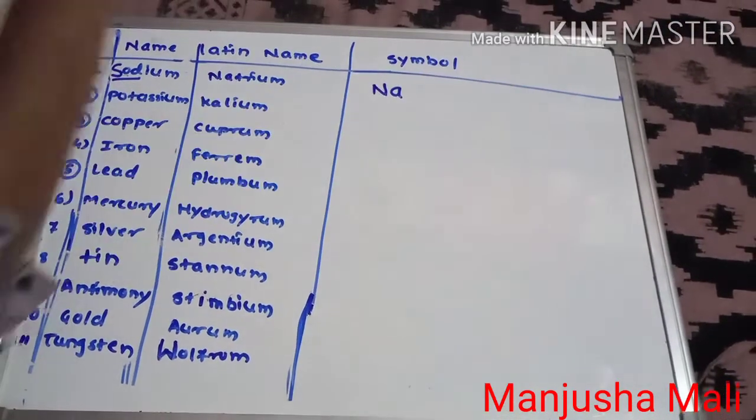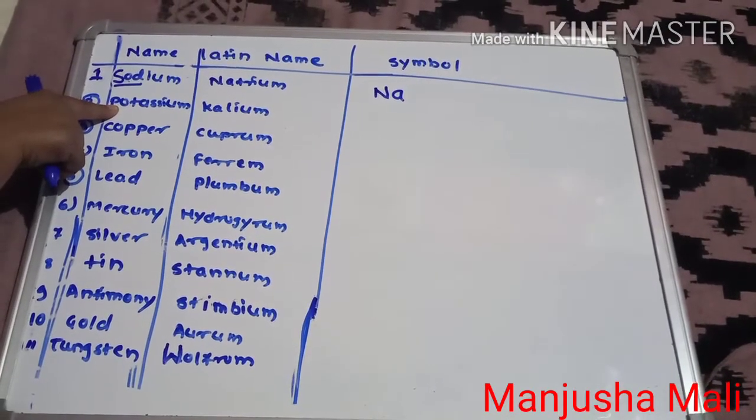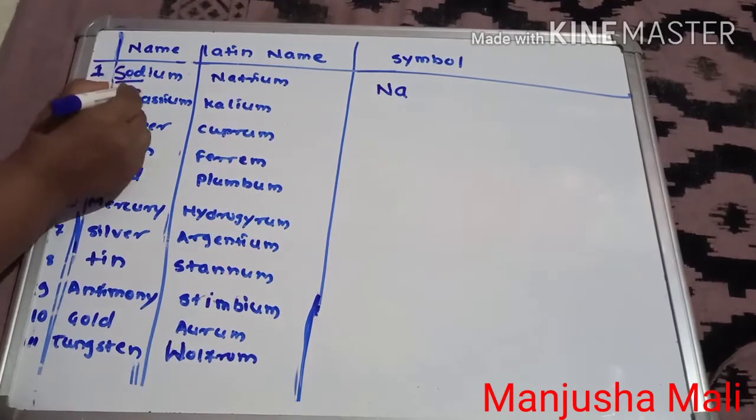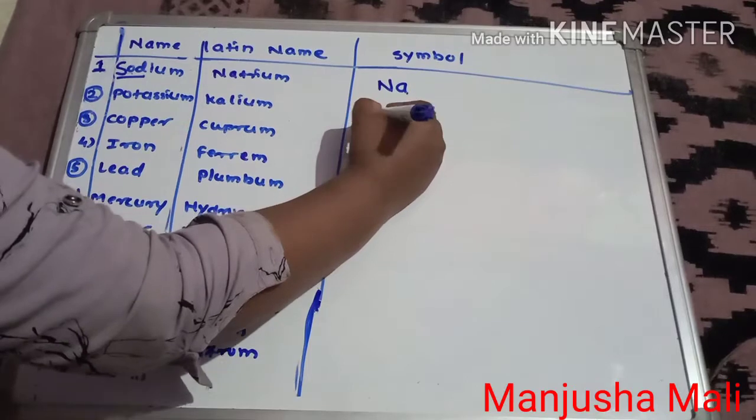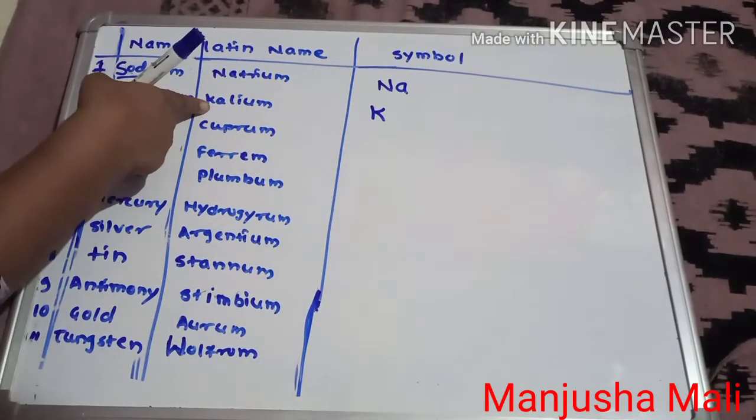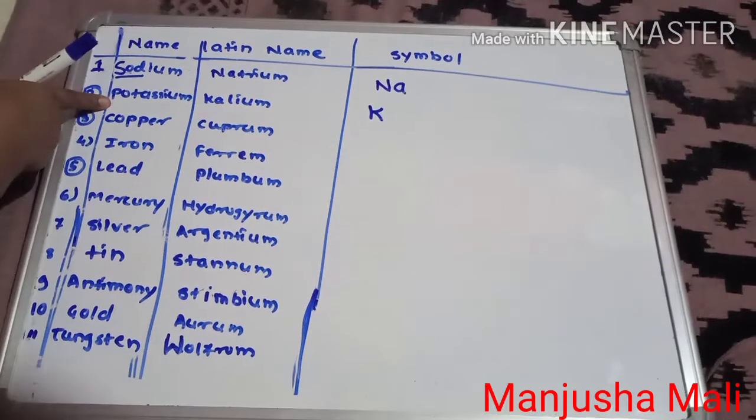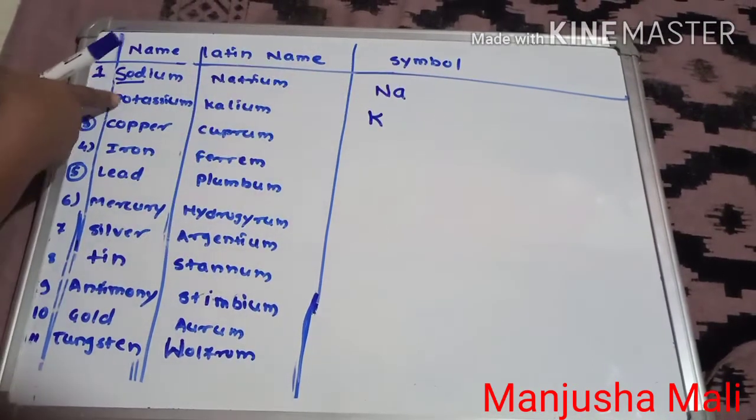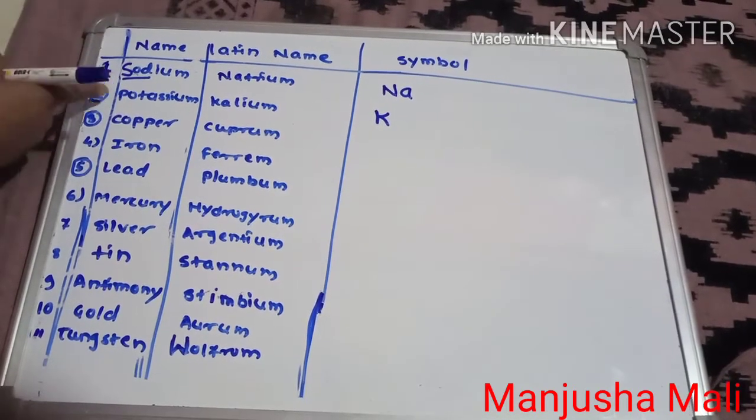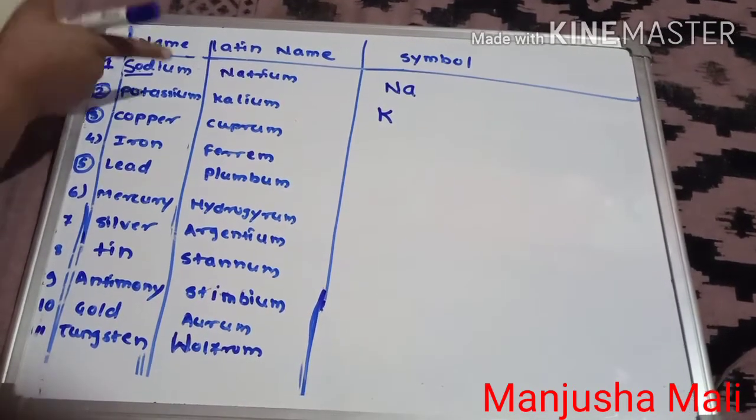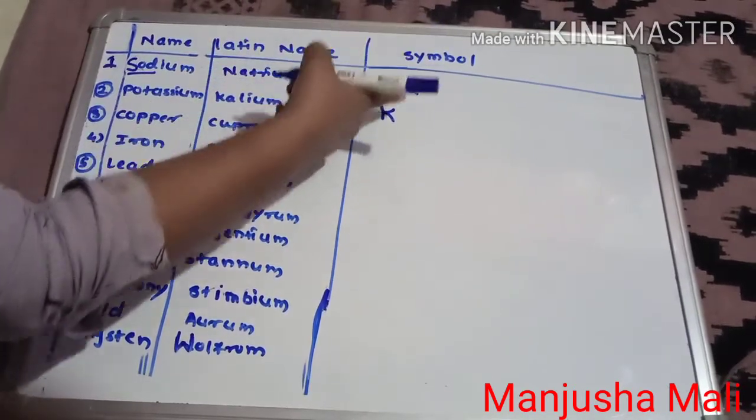Potassium. Potassium means K, because the Latin name of potassium is Kalium. So the symbol of potassium is K, not begins with P. Potassium means P is a symbol of phosphorus, so potassium is having Latin name Kalium, so symbol of potassium is K.